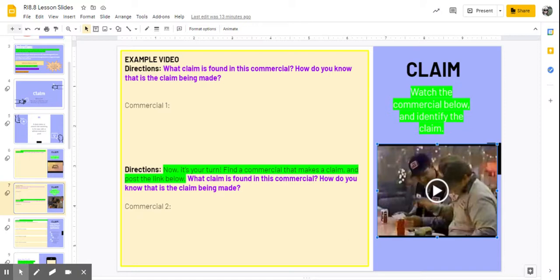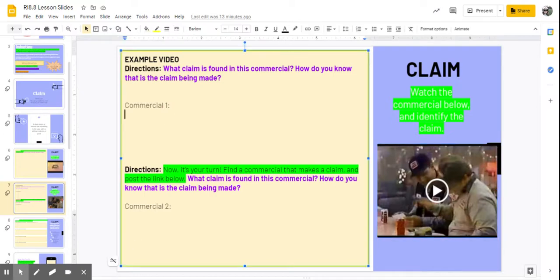How do you know that this is the claim being made? We are lucky that at the end of this commercial there is a slogan at the bottom that says nothing else is a Pepsi, or something like that. But we know that the claim being found in this commercial is that Pepsi is better than coke. So that's our claim. I'm gonna make sure I type that appropriately: Claim - Pepsi is better than coke.